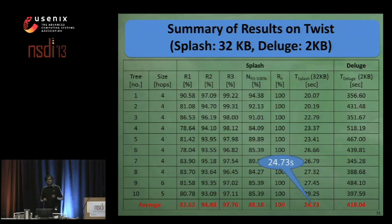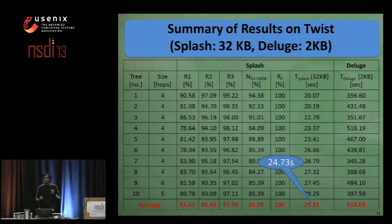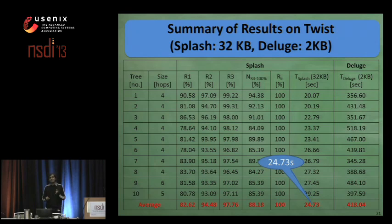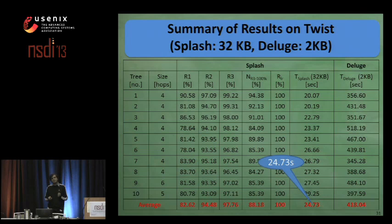Performance of SPLASH on Twist is similar to what we observed on Indriya. It takes the same duration of about 25 seconds for disseminating the same 32-kilobyte object. This demonstrates that network size has minimal effect on the performance of SPLASH because of its tree pipelining.